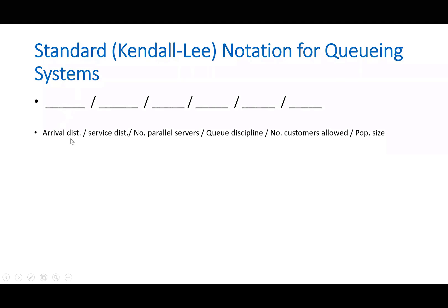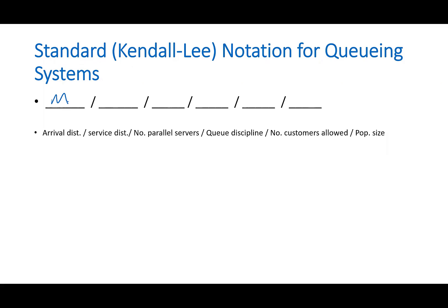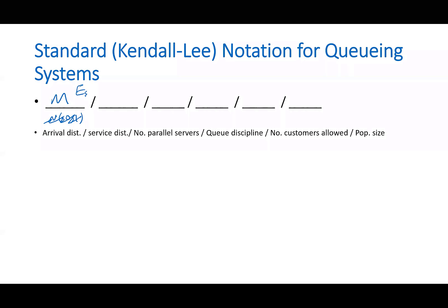The first one talks about arrival distribution. When you put M here, it means the arrival distribution is memoryless or follows an exponential distribution. If I put, for example, normal 50 and 1, it means the arrival process follows a normal distribution with the mean of 50 and variance or standard deviation of 1. But we usually put M over there. Or if I put E5, it means it follows an Erlang distribution with K equals 5. We will talk about that later.